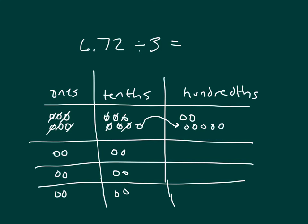That 1 more is what I regroup over to the 100's place. And then from the 100's place, I can divide by 3 again. So there's 12 divided by 3 is 4. And that's my answer. Here's my answer: 2 ones, 2 tenths, 4 hundredths, or 2.24.